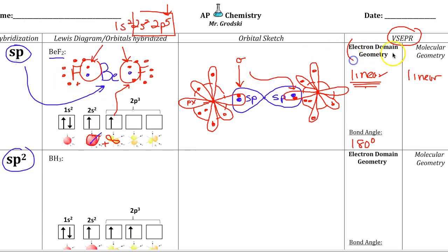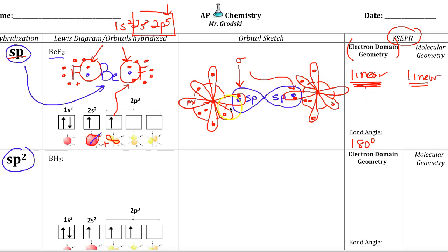The electron domain geometry is the geometry of all electrons around the central atom. Sometimes we'll see lone pairs, so we consider all orbitals. Since we only have two orbitals — S and P coming together to make two orbitals — they always repel into a 180-degree shape. Because there are no lone pairs, we also see linear for the molecular geometry. If it's SP hybridized, the bond angle must be 180 degrees; the electron domain geometry is always linear.